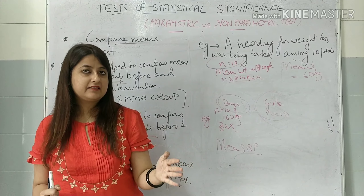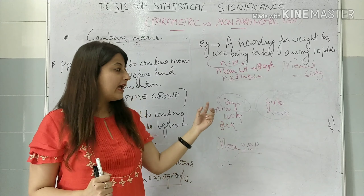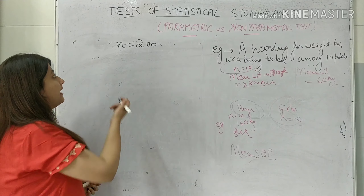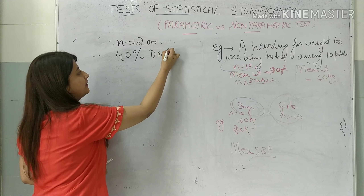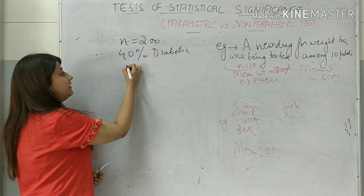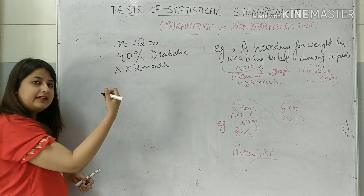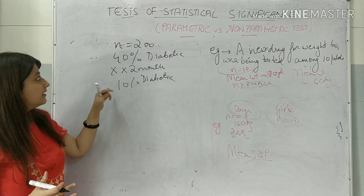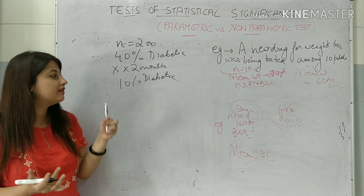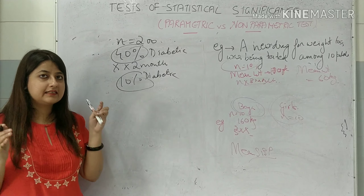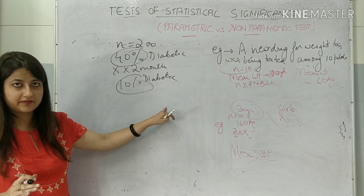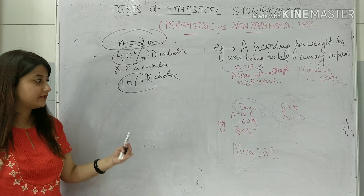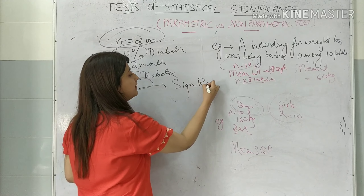The counterpart of paired T-test is the signed-rank test, and of unpaired T-test is the Mann-Whitney U test. For example: suppose we have a group of 200 people and 40% are diabetic. I give a drug for two months and after that only 10% are diabetic. Which statistical test is used? Since values are given in percentages, this is clearly a non-parametric test. And since we are doing it on the same group, we use the counterpart of paired T-test — the signed-rank test.